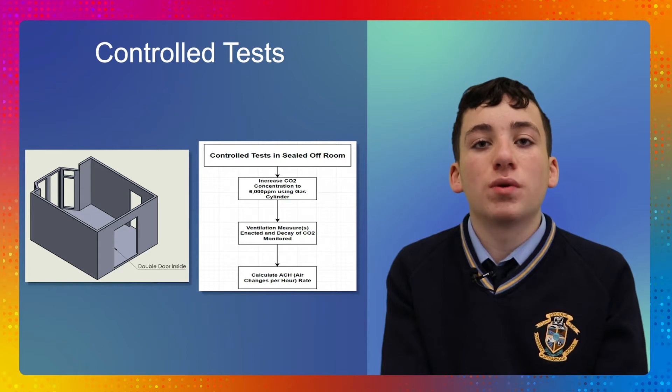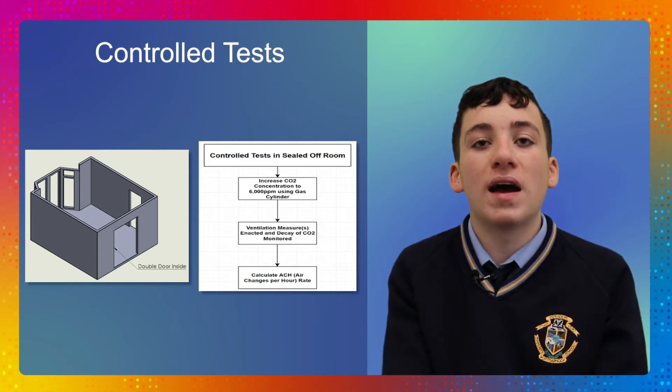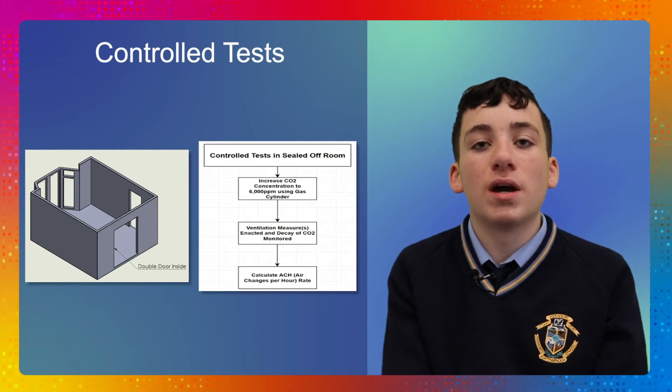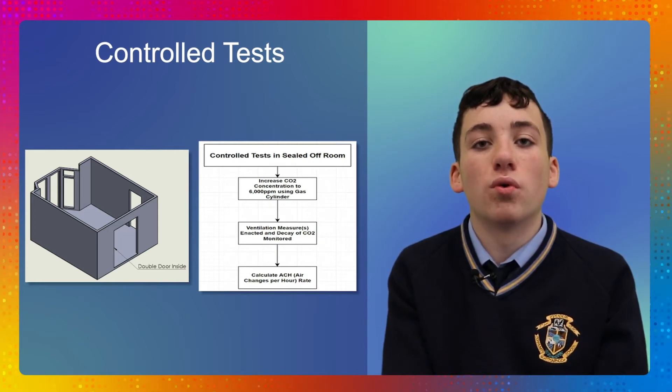I assessed the effectiveness of various ventilation techniques, both passive such as opening a window or door, as well as fan-assisted active ventilation techniques, using both controlled and real-life tests. The controlled tests were conducted in a sealed-off room and involved the release of CO2 from a gas cylinder in a safe manner until a concentration approximately 15 times that of outdoor air was recorded on a Raspberry Pi based instrumentation system.